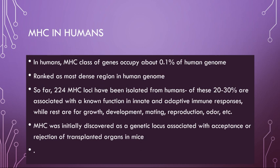In humans, the MHC gene family occupies only 0.1% of the human genome — a very small region — yet it is ranked as the most dense region of the human genome, being very compactly packed with many structural variations. So far, 224 MHC loci have been isolated from humans, of which 20 to 30 percent are associated with known functions in adaptive immune responses.